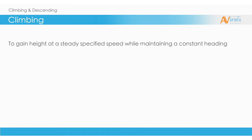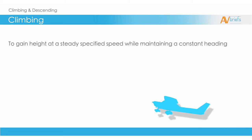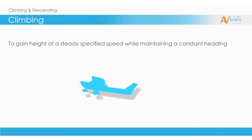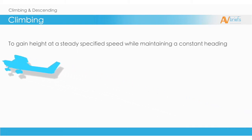We'll start by looking at the climbing part of climbing and descending. The definition of climbing is to gain height at a steady specified speed while maintaining a constant heading. This is a big lesson and some of the theory can get in depth. So grab a beverage and a good chair and let's get started.